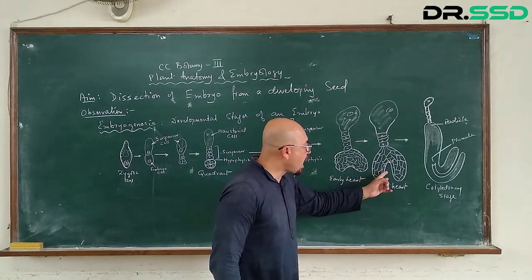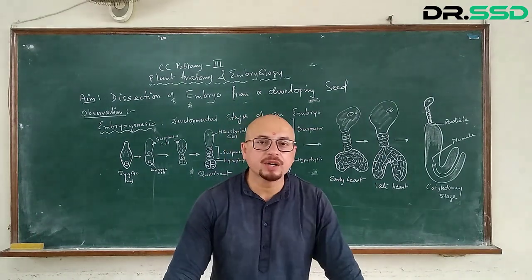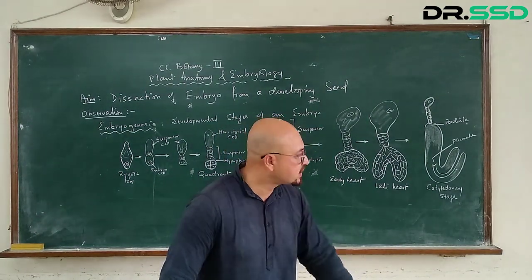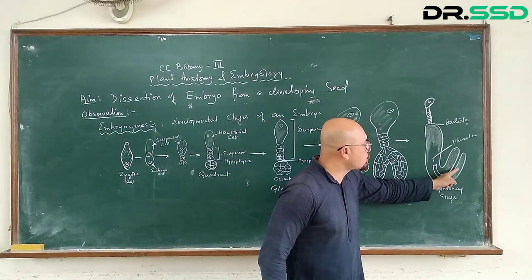And this late heart-shaped embryo is eventually going to become the cotyledon stage where you can see there are two prominent cotyledons. This is the cotyledons.